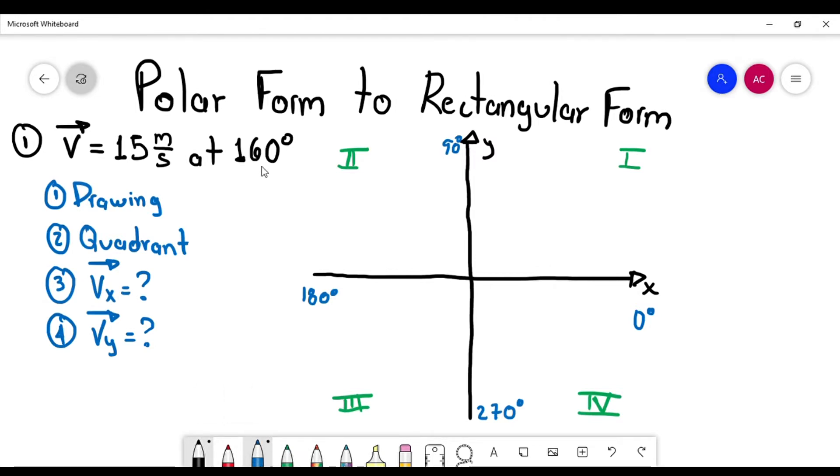So 160 degrees must be between 90 and 180 degrees. I'm not going to do it so accurate, I mean, just between 90 and 180. The vector starts from the origin. Remember that I start from the origin. So I'm going to draw it just like this.